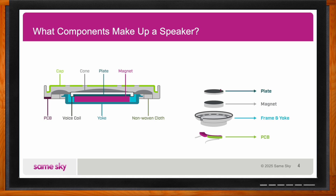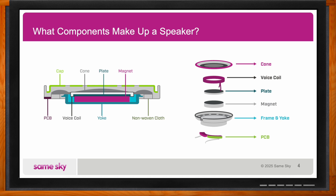Sitting above the magnet, we have the plate, which is used to help direct the magnetic flux towards the coil. The voice coil is where your electrical signal goes — the alternating current fed into the system generates a magnetic field that interacts with the field of the permanent magnet. And then at the top, we have the cone, which is adhered to the voice coil and transfers the kinetic energy generated by the speaker assembly to produce sound pressure waves that we perceive as sound.